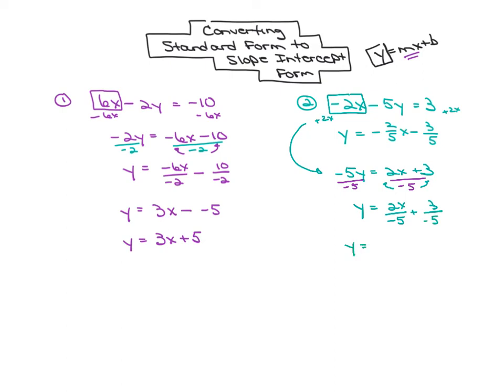For the first term, 2 divided by negative 5 is simply negative 2 fifths. I'm going to write that as a fraction times x. Plus 3 divided by negative 5 is the fraction negative 3 fifths. And finally, let's handle those double signs, negative 2 fifths x minus 3 fifths.